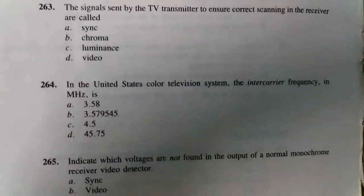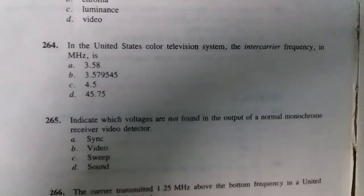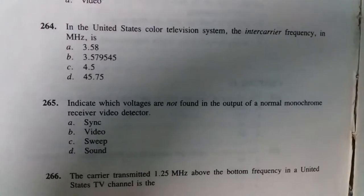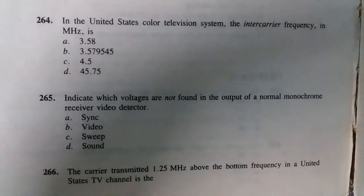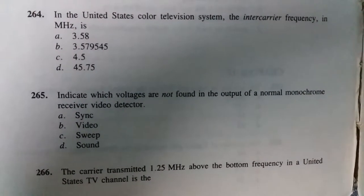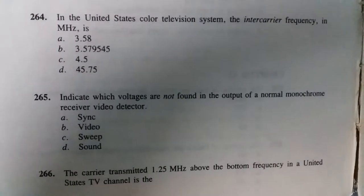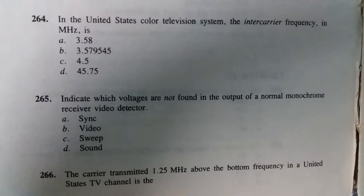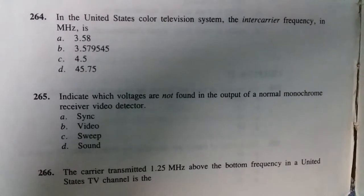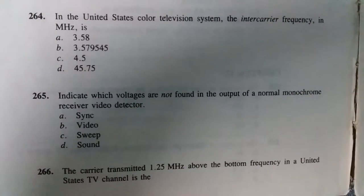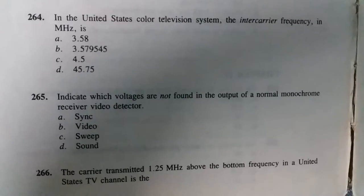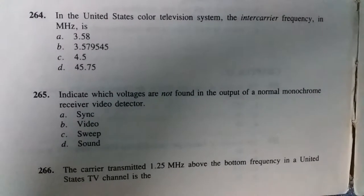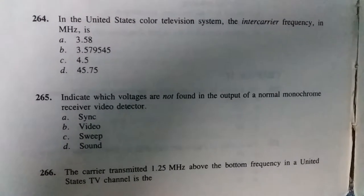In the United States color television system, the intercarrier frequency in megahertz is 4.5. Indicate which voltages are not found in the output of a normal monochrome receiver video detector.